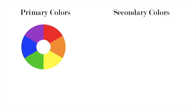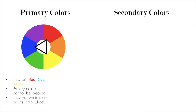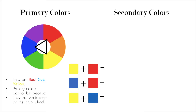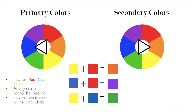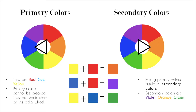Another thing I'm sure you've heard about is primary colors and secondary colors. Primary colors are red, blue, and yellow. The thing with primary colors is they cannot be created, and they're always going to be equidistant from each other on the color wheel — right now they're all divided by one space. All these primary colors, if you put them in different combinations, will make your secondary colors, which are orange, purple, and green. And that's essentially the basics of the color wheel.